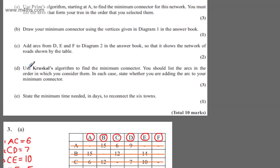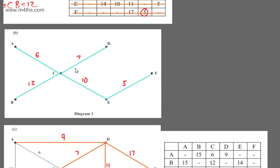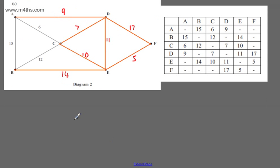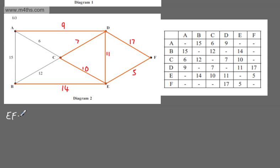In part D, for three marks, use Kruskal's algorithm to find the minimum connector. We should list the arcs in the order we consider them, stating whether we're adding each arc to the minimum connector. With Prim's we can start anywhere; with Kruskal's we need to start with the arc of lowest weight. So I'm going to write them out in order. The one of lowest weight is E to F, equal to 5.